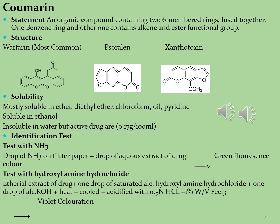Warfarin is isolated from coumarin sources and is used as an anticoagulant agent — a blood thinner — that reduces the formation of blood clots in veins and arteries. The second molecule, psoralen, is isolated from Ficus carica, Ammi visnaga, and Foeniculum vulgare. It is used in skin diseases like vitiligo and eczema. The third molecule, xanthotoxin, is isolated from Ammi majus and is also used for treatment of skin diseases including vitiligo and eczema.